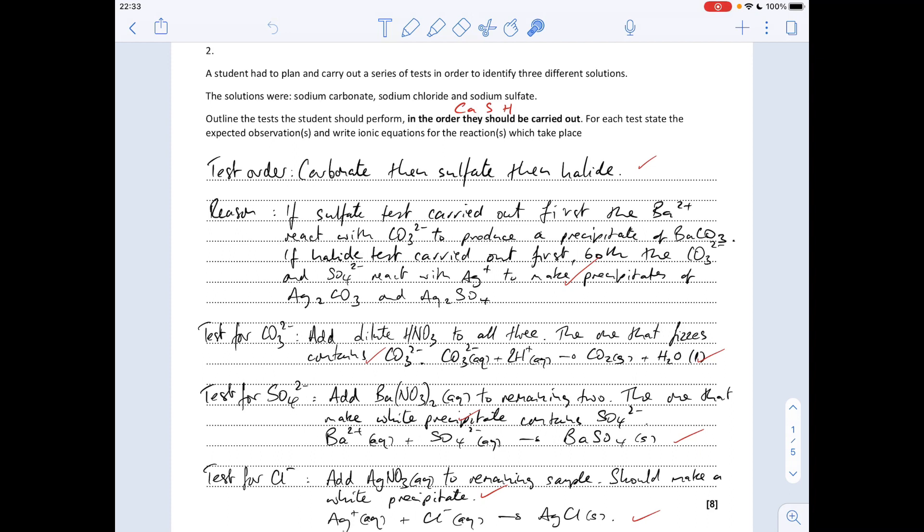We'll start with the order. I've got this acronym CASH that I use to get the order right, so it's carbonate first, then sulphate, then halide. So there's the order and obviously that's going to score you a mark.